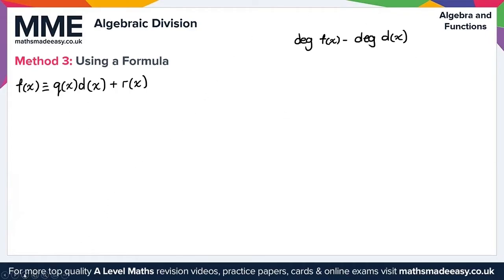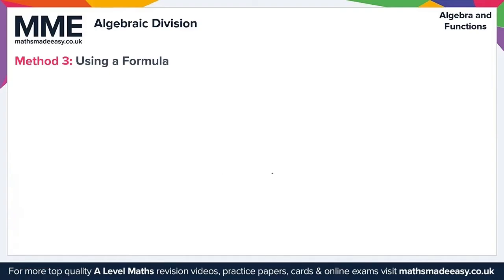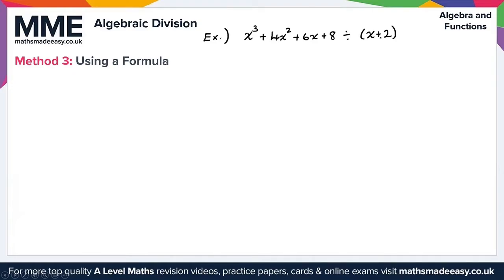Let's look at an example. We want to divide x cubed plus 4x squared plus 6x plus 8 by x plus 2. For step one, the polynomial has degree 3 and the divisor has degree 1, so the quotient has degree 3 minus 1, which is 2 — a quadratic. The remainder has degree 0.